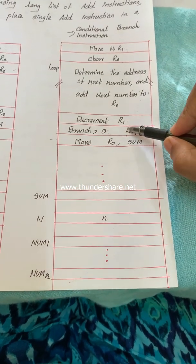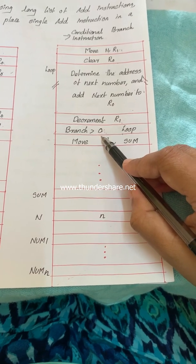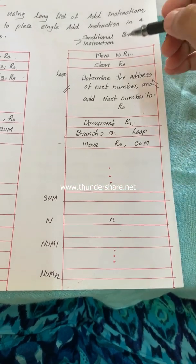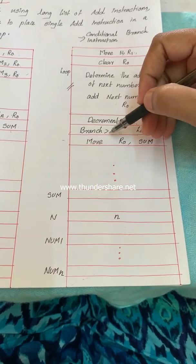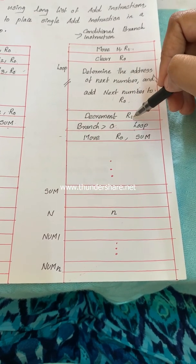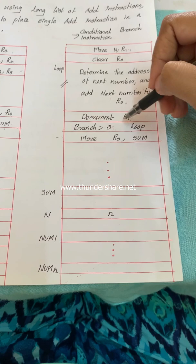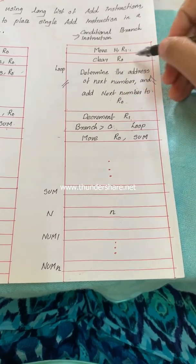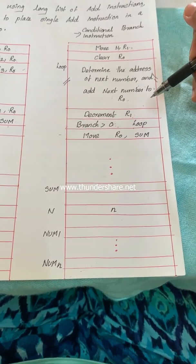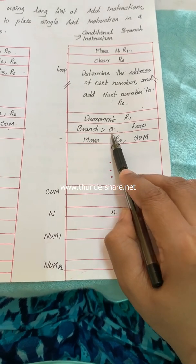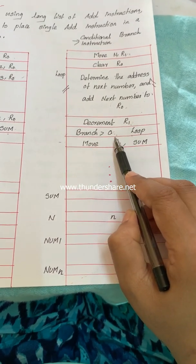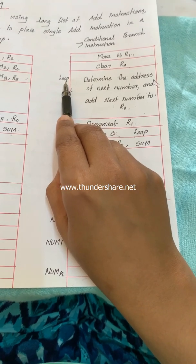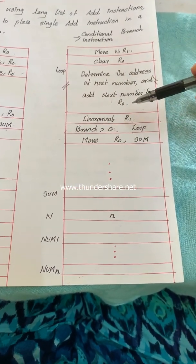After each addition, decrement the count by one, then check if the count is zero or not. If the count becomes zero, we have already added all numbers and the result is in register R0. If R1 is not zero, we still need to add more numbers. In the case of branch-greater-than-zero, if this condition is true, we need to move to the location labeled 'loop' to continue the loop body again.